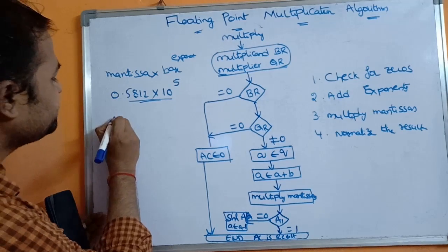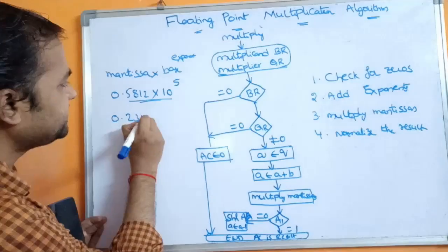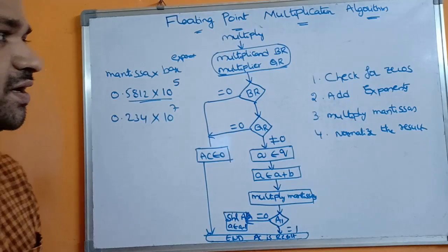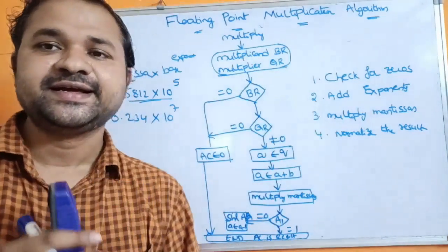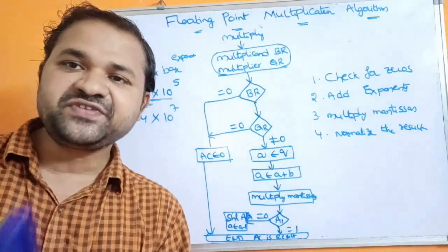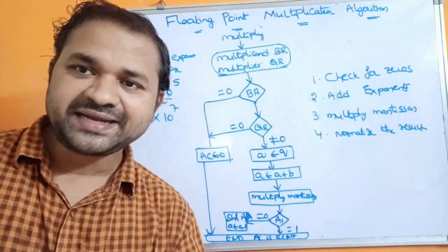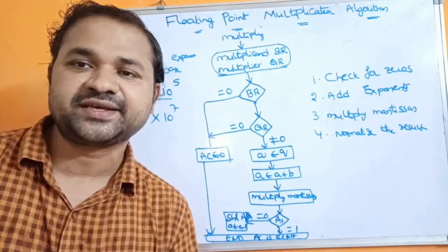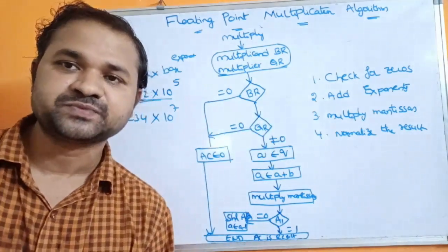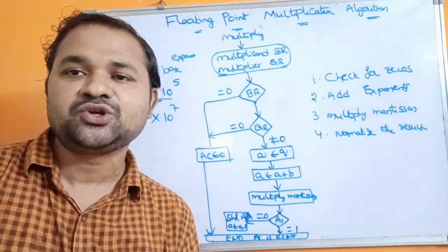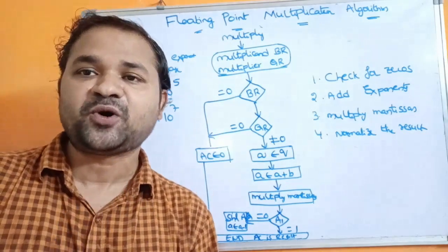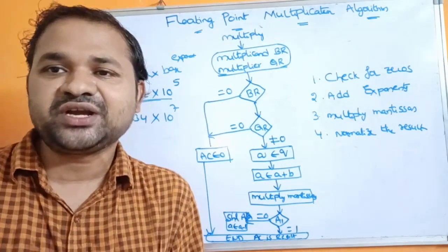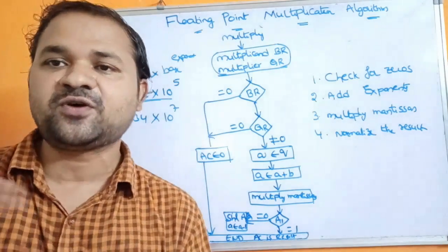Let the first number be 0.5812 × 10^5 and the second number be 0.234 × 10^7. Now the first step is to check for zeros. We have to check whether the multiplicand and multiplier are zeros or not. If any one of them is zero, or if both are zero, then zero into anything equals zero, so there is no need to perform the multiplication operation — the result is zero.